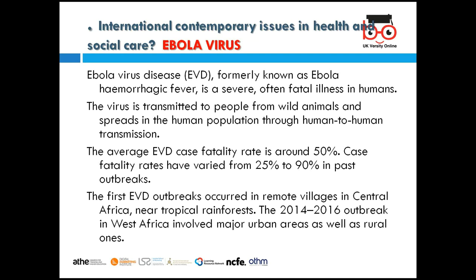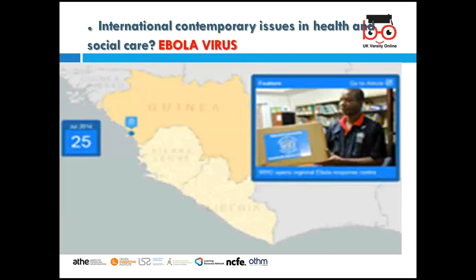The 2014–2016 Ebola outbreak in West Africa involved major urban as well as rural areas, and many people lost their lives. The affected area included Guinea, Sierra Leone, and Liberia. Many people in this region of West Africa lost their lives, and the UN came in to support because the countries could not handle it alone, making it a global issue.